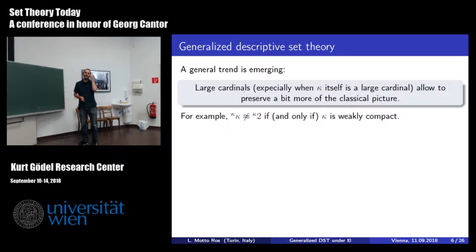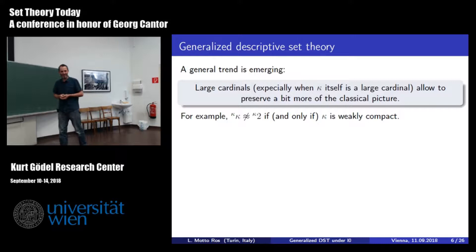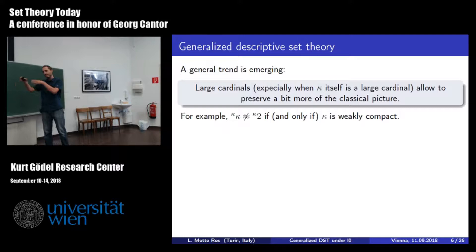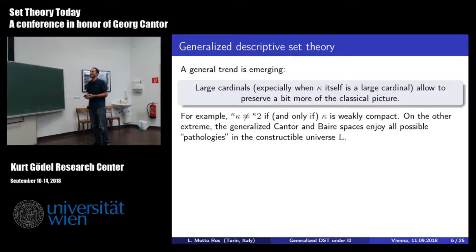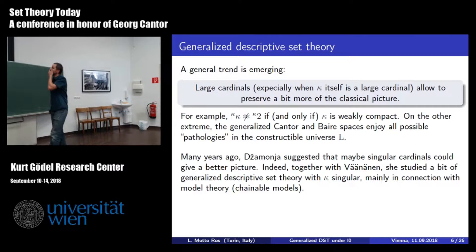For example, if you take kappa weakly compact, then you recover that 2^kappa is not homeomorphic to kappa^kappa—they are different. In all other cases they are homeomorphic, which is a striking contrast to the classical case. Another example: if you have an inaccessible and you collapse it, like in the Solovay model, then you get regularity properties for definable sets in the generalized context too, just as in the classical context—you need an inaccessible, otherwise you don't get it. Also, in the constructible universe L, essentially all pathologies show up—it is the worst model for generalized descriptive set theory, possibly because there are no large cardinals in L.